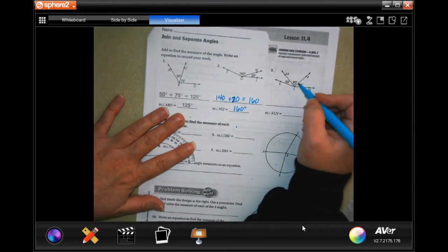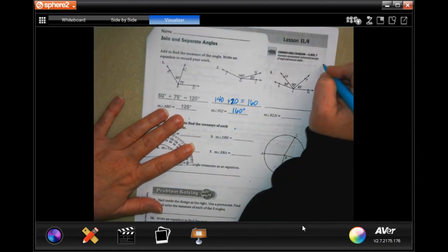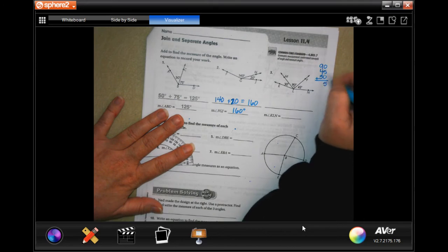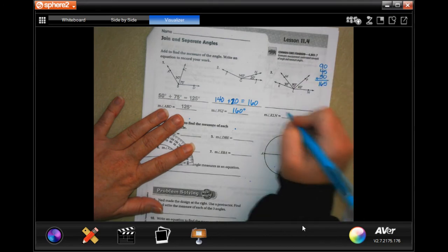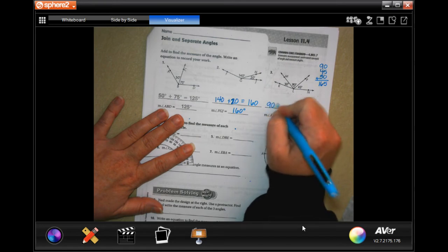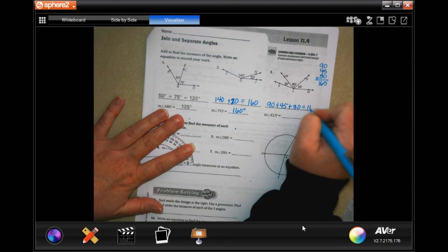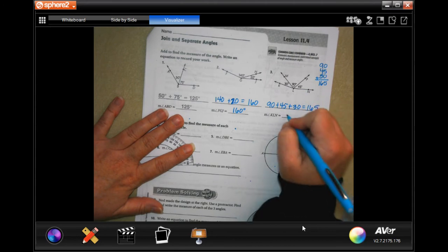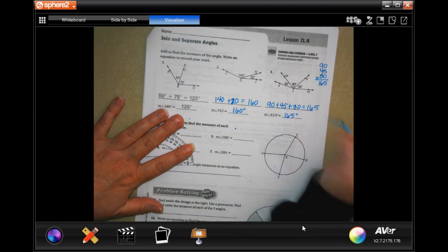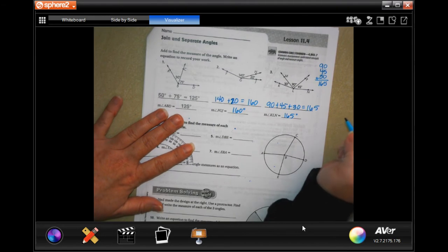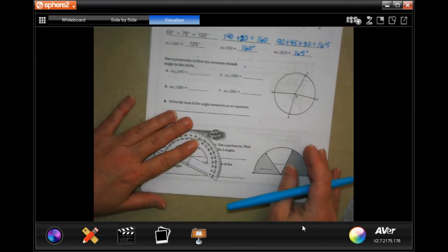So 30, 90 and 45. I'll put the 90 up top, the 45 and then the 30. And I'm going to add those up. 5, 9 plus 4 is 13, plus 3 is 16. So 90 plus 45, plus 30 is 165. And it's 165 degrees. Super easy guys. Don't make it harder than it's got to be.